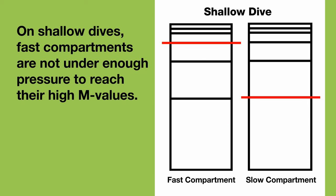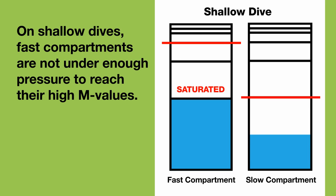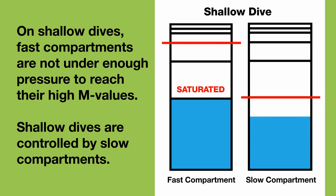On the other hand, on shallow long dives, fast compartments are not placed under high enough pressure to reach their high M values, no matter how long the dive is. So shallow long dives are controlled by slow compartments.